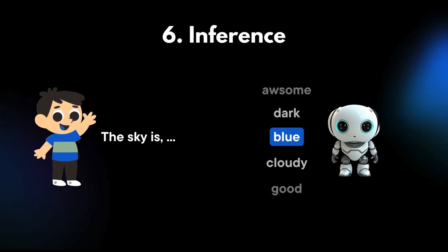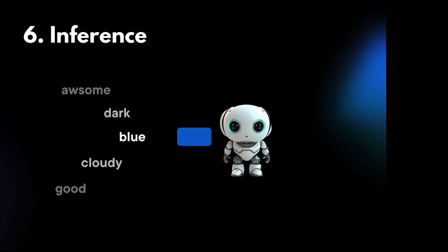Once trained, the model can generate responses to users' queries by predicting the next word in a sequence, considering all the previous words. This process happens in real-time, allowing ChatGPT to generate coherent and contextually appropriate replies.